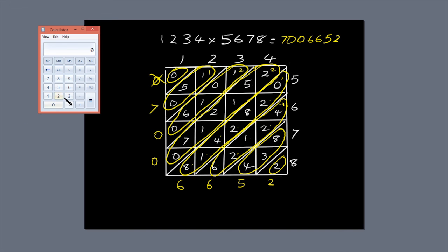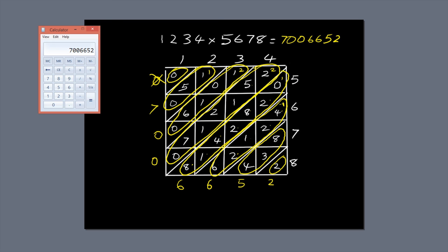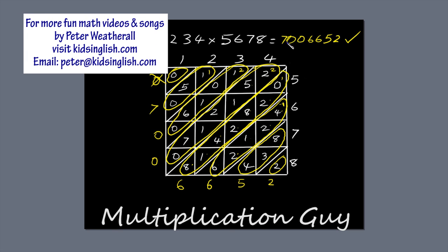I'm going to check the answer on my calculator, but I'm allowed to do that because I'm not a rabbit. 1,234 times 5,678 equals 7,006,652. So the answer's correct. That's why they call me The Multiplication Guy.